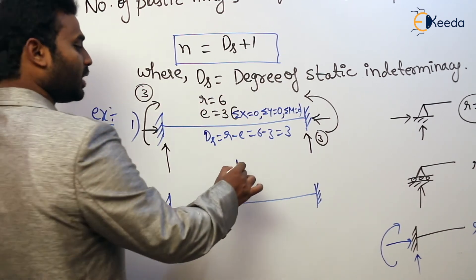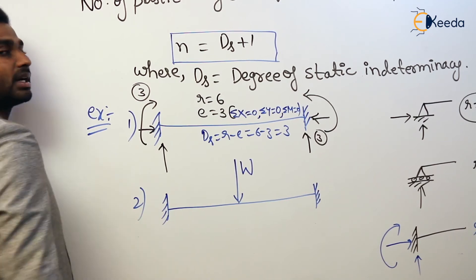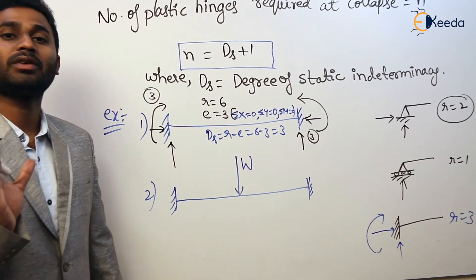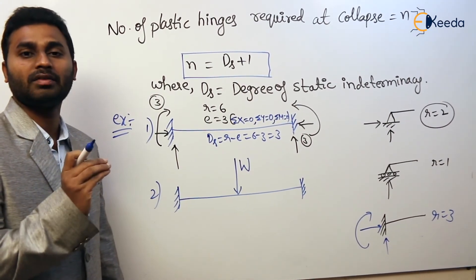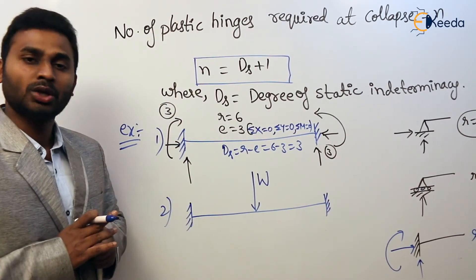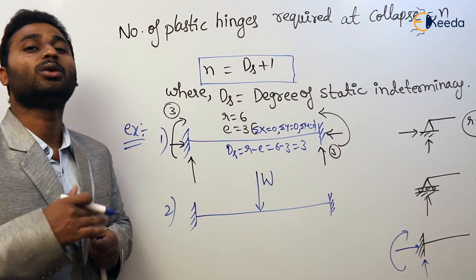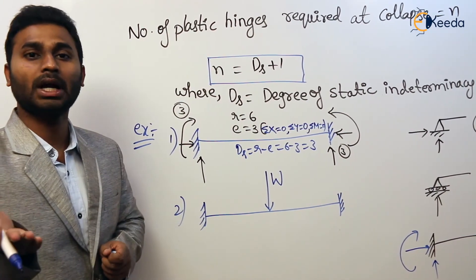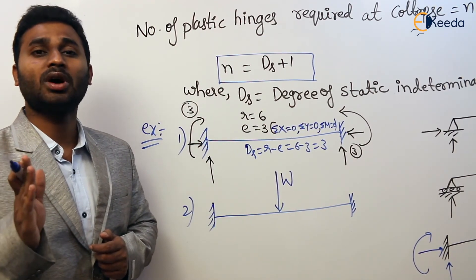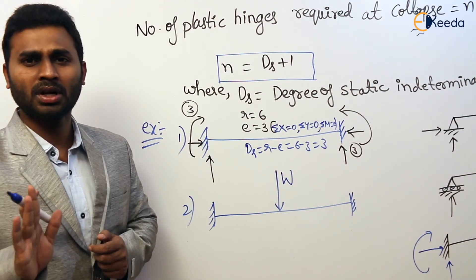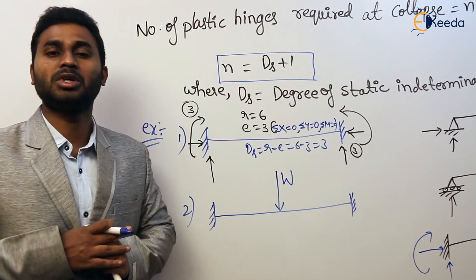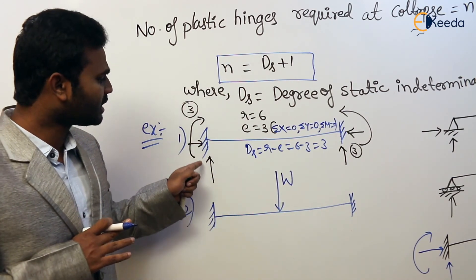Now come to the second case. In the second case there exists a load W. Always remember: in the calculation of degree of indeterminacy, first we have to check whether the beam given is a generalized structure or has any particular loading. In the first case it is a generalized case — loading is not mentioned — so we assume the load may be horizontal, vertical, or inclined. If inclined, it can be resolved into horizontal and vertical components, and that support has to offer resistance in both directions.